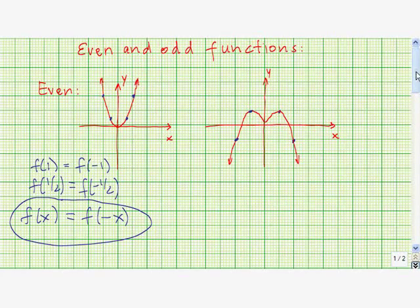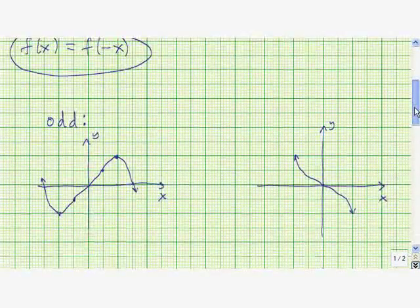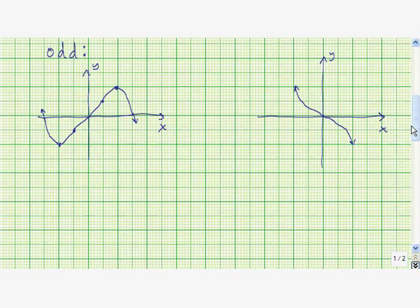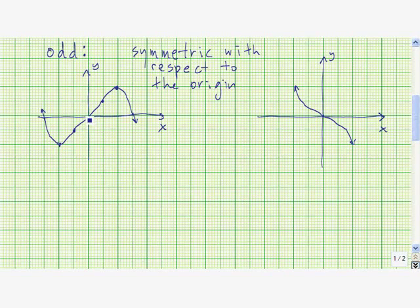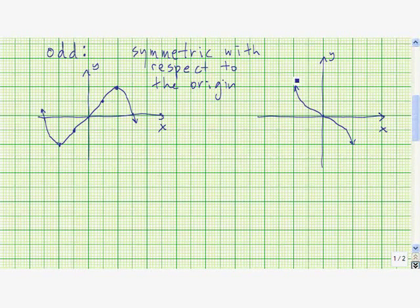Now let's take a look at odd functions. Odd functions have a very nice property: they are symmetric with respect to the origin. What that means is that if we take the graph and spin it halfway around, this portion of the graph is going to meet up with that portion. Likewise over here, if we spin it halfway around, this graph is going to match up with that graph.